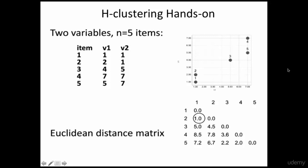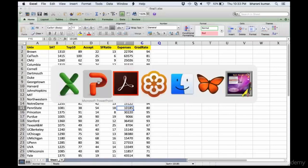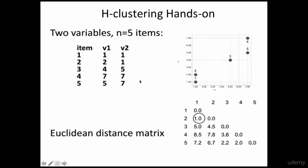Rather than dealing with a large dataset — like the example of clustering with 25 universities and 6 variables — we are just taking a tiny example to understand hierarchical clustering hands-on. We are choosing only five items, and each item has a V1 and V2, similar to your y-axis and x-axis. For the first entry, V1 is 1 and V2 is 1. For the second entry, V1 is 2 and V2 is 1.